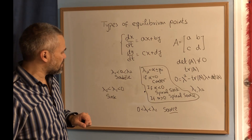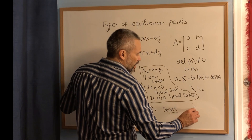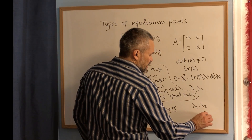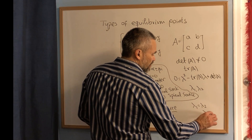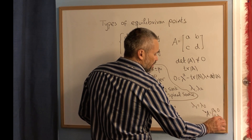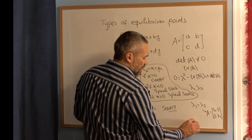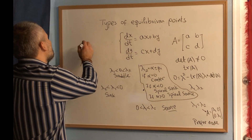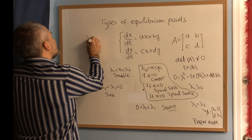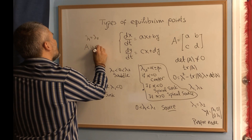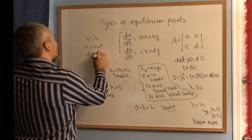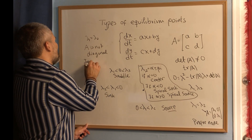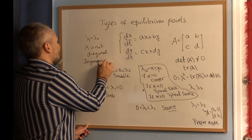The only remaining case is when lambda 1 equals lambda 2. When lambda 1 equals lambda 2, we have two possibilities. If the matrix A is diagonal — meaning it looks like [lambda 1, 0; 0, lambda 1] — then we have what is called a proper node. If lambda 1 equals lambda 2 but the matrix A is not diagonal, then we call this an improper node.